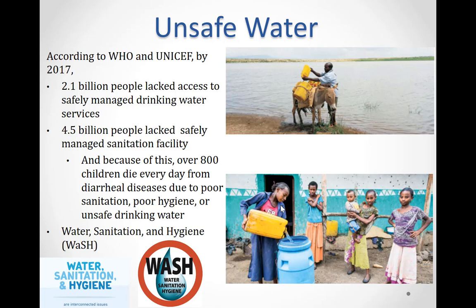The impact on child mortality rates is devastating, with more than 340,000 children under five dying annually from diarrheal diseases due to poor sanitation, poor hygiene, or unsafe drinking water — that is more than 800 deaths per day. WASH is the acronym for water, sanitation and hygiene. Due to their interdependent nature, these three core issues are grouped together to represent a growing sector.